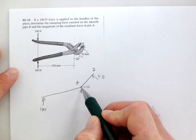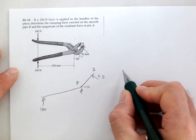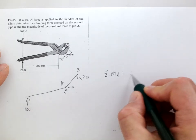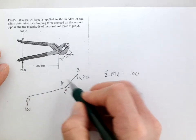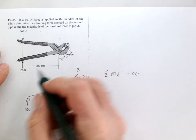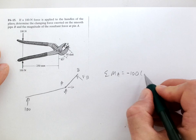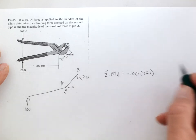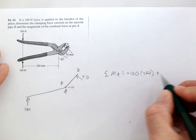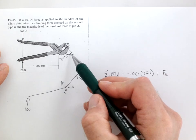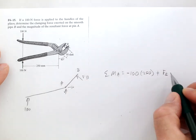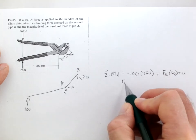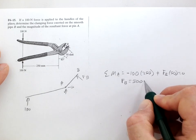Sum the moments about A: we've got 100, and that's causing rotation this way, so it's negative. It's got a length of 250. And then FB causes rotation this way, so it's positive, with a length of 50 millimeters. That equals zero, so FB equals 500 newtons.